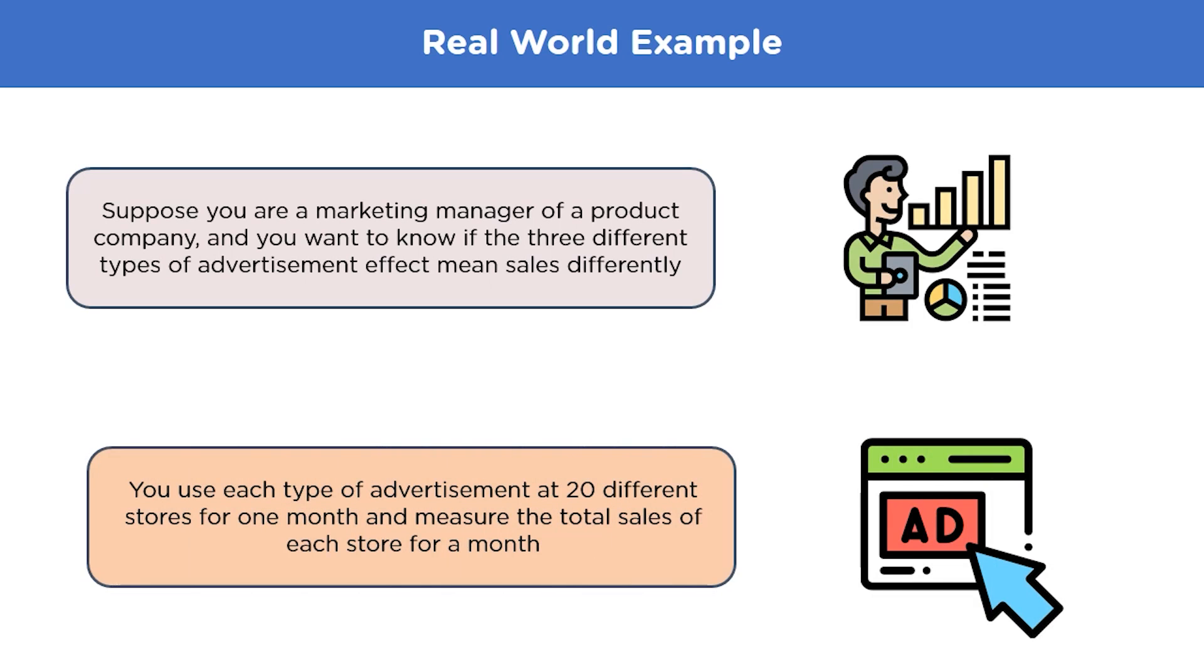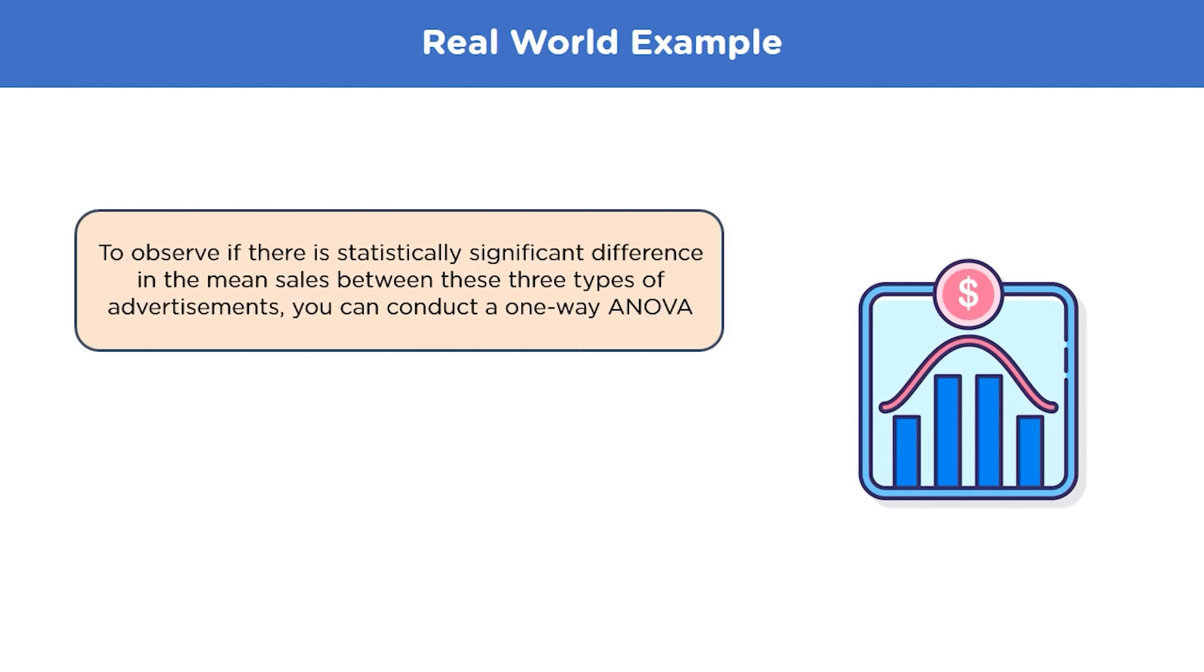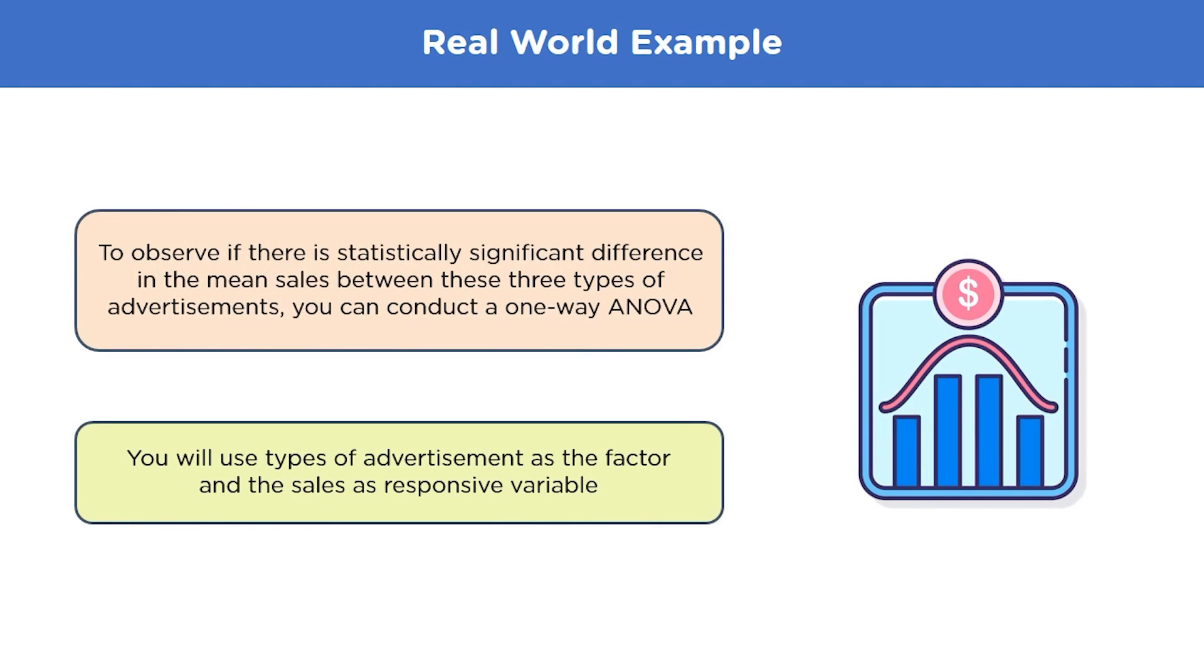You will use each type of advertisement at 20 different stores for one month and then measure the total sales of each store for a month. To observe if there is a statistically significant difference in the mean sales between these three types of advertisements, we will conduct a one-way ANOVA. For calculating the ANOVA, you will use the type of advertisement as a factor and the sales as a response variable.